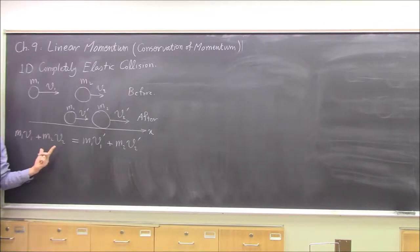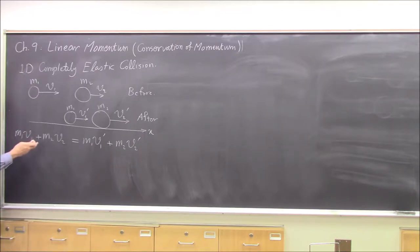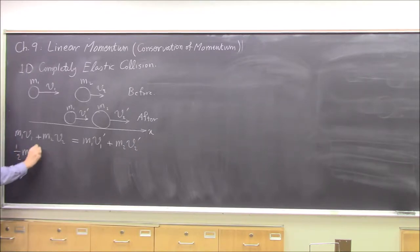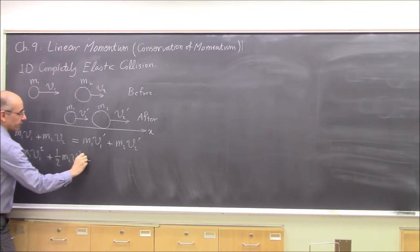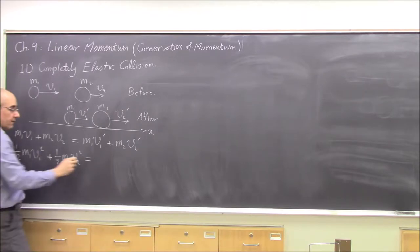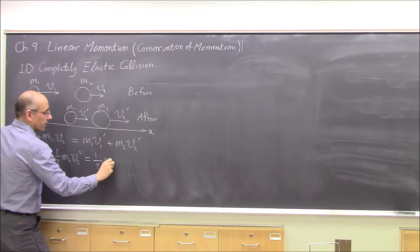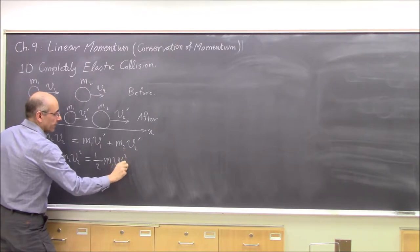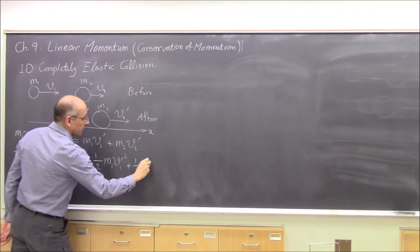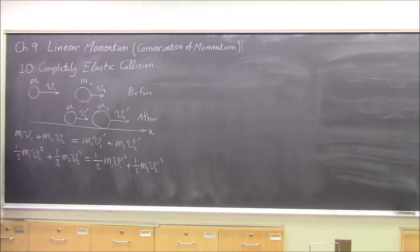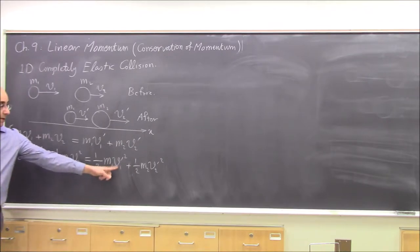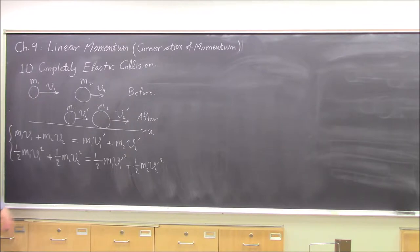Since the collision is elastic, we also have conservation of kinetic energy — total kinetic energy before equals total kinetic energy after. So one-half M1V1 squared plus one-half M2V2 squared equals one-half M1V1 prime squared plus one-half M2V2 prime squared. We have these two equations and need to solve for V1 prime and V2 prime — two equations, two unknowns, and one of them is quadratic.